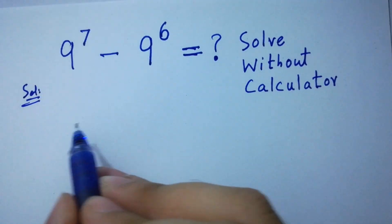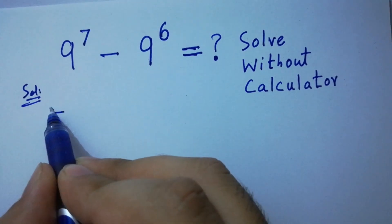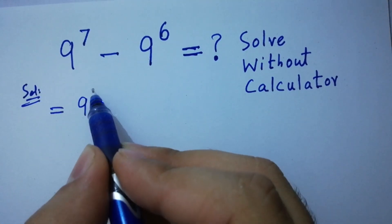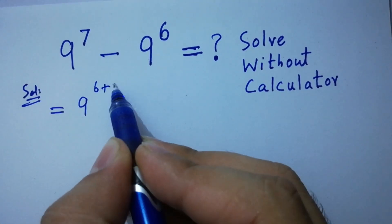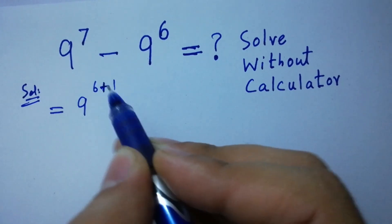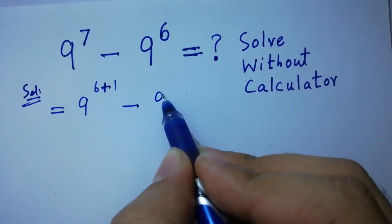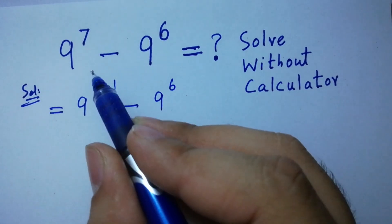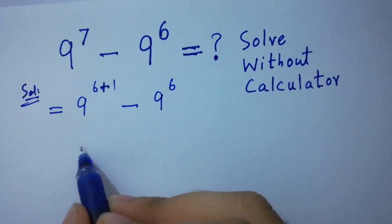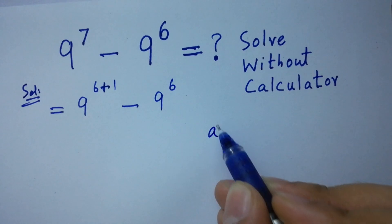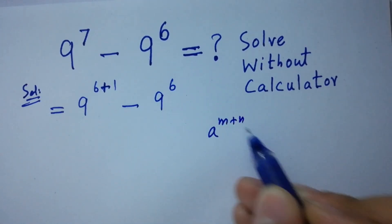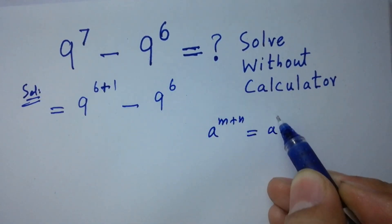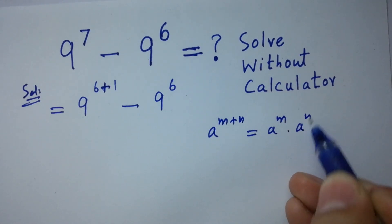Here, it can be written as 9 to the power 6 plus 1 minus 9 to the power 6 since 6 plus 1 is 7. As we know, a to the power m plus n equal to a to the power m times a to the power n.